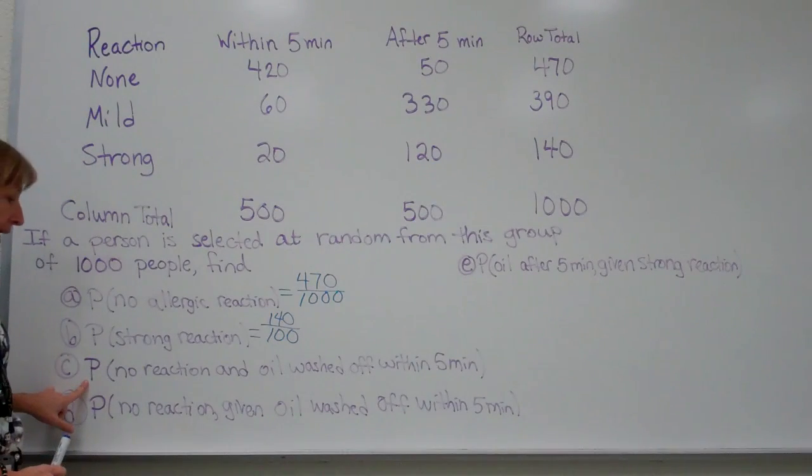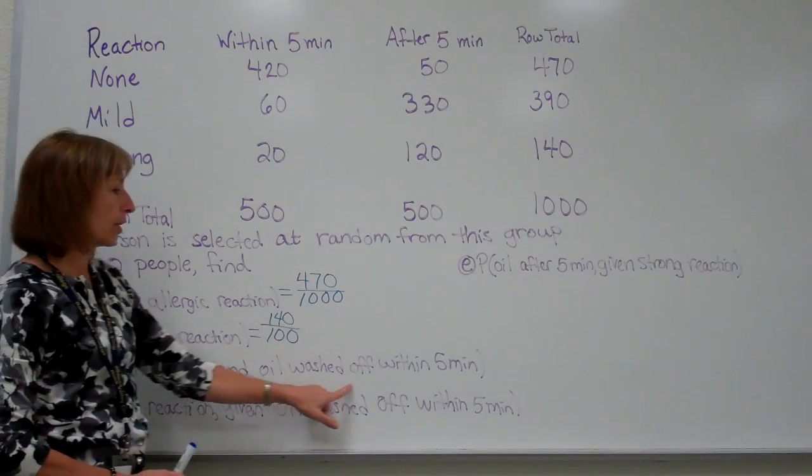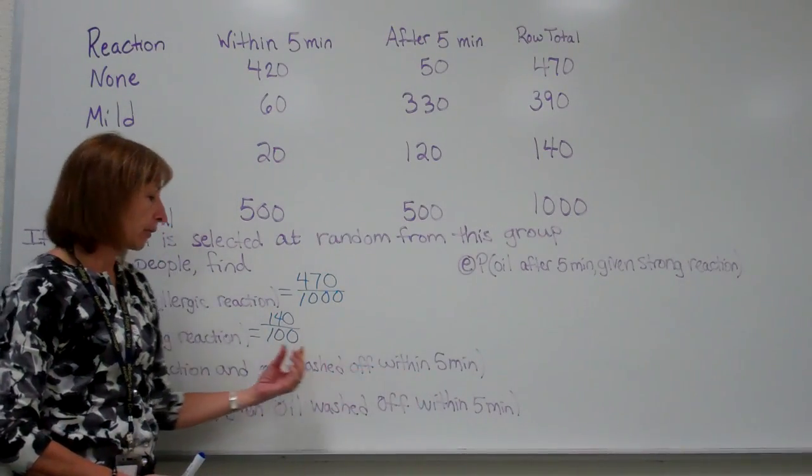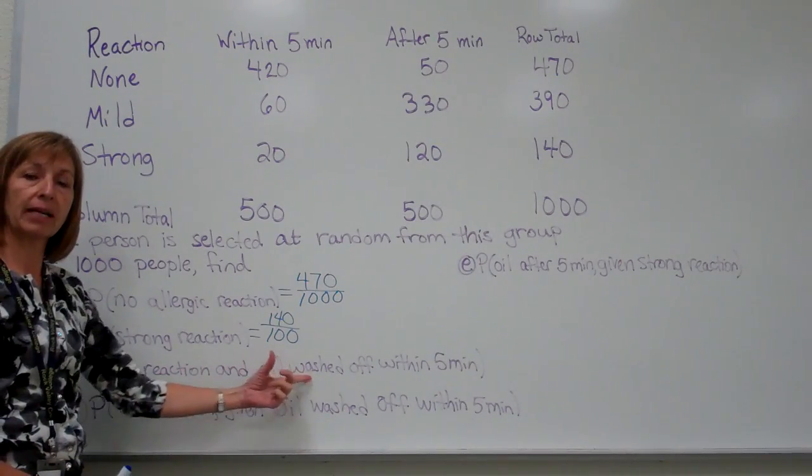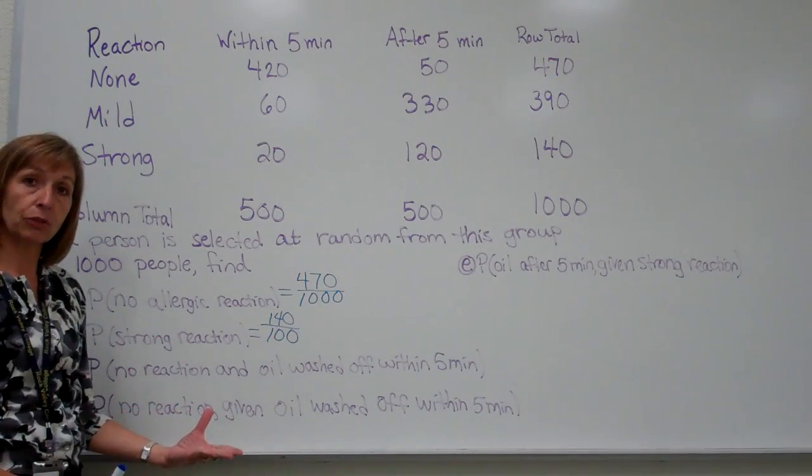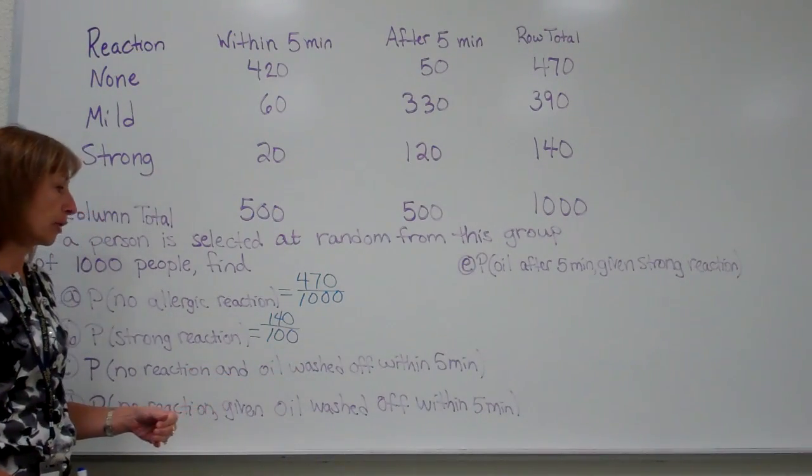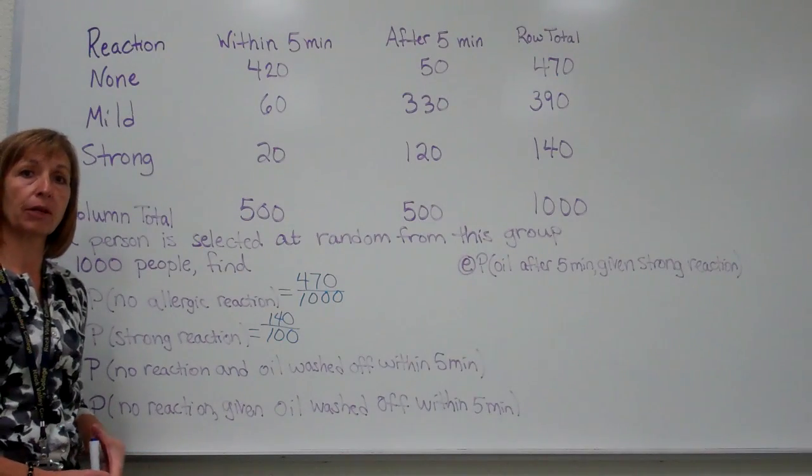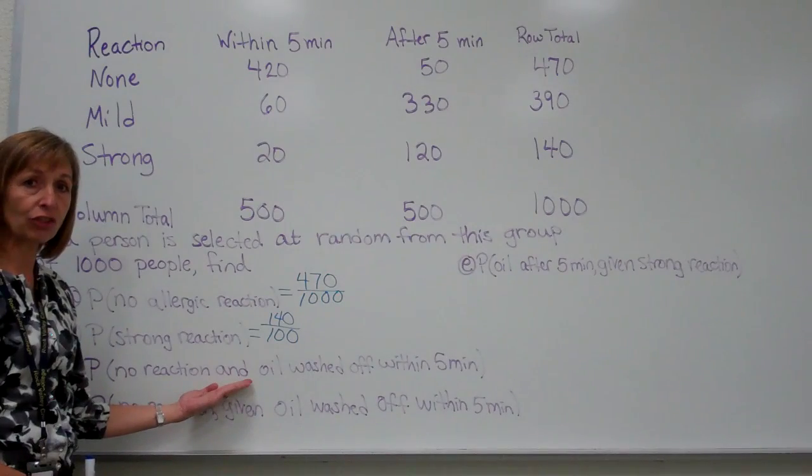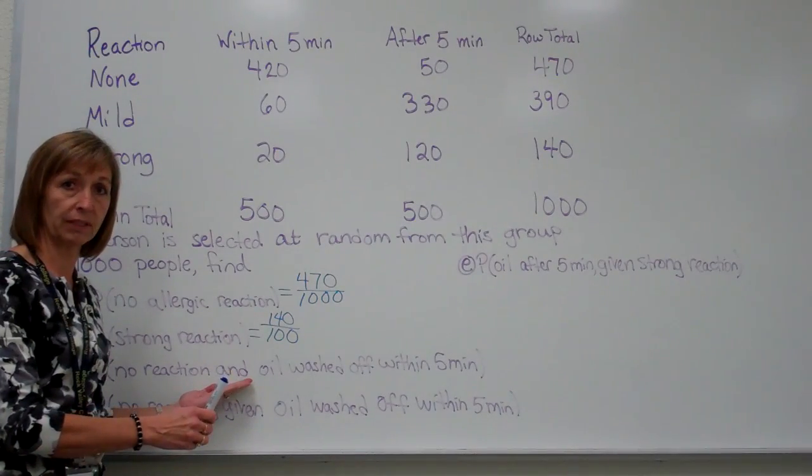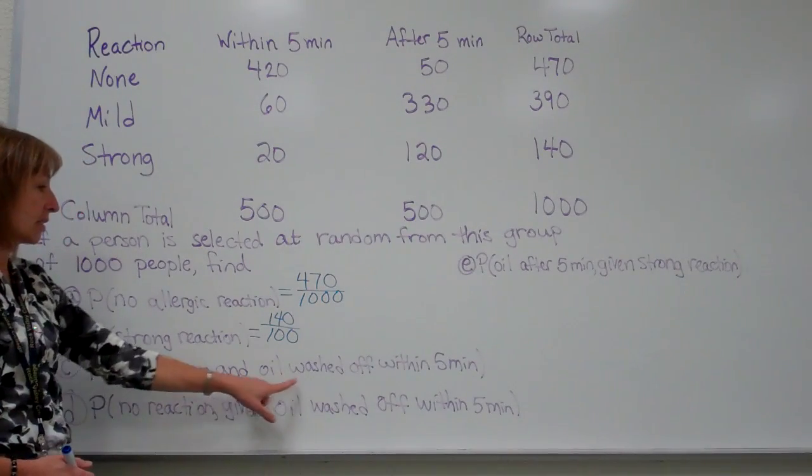Part C says find the probability that there's no reaction and the oil is washed off within 5 minutes. Now normally when I have and as my compound event, when I'm asked the probability, I could use the formula for the probability of A and B and use the multiplication that's appropriate, whether they're dependent or independent events. But if I have it on a table, I can actually just go to the sample space organization here and pull out the probability.